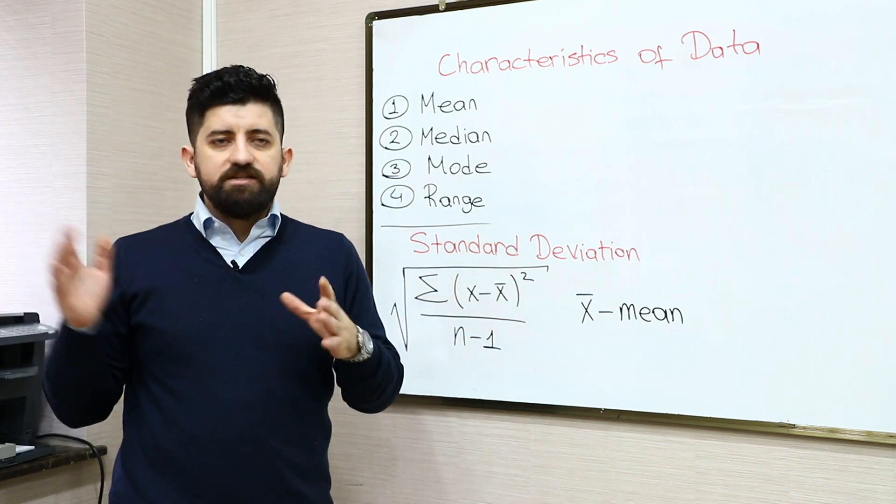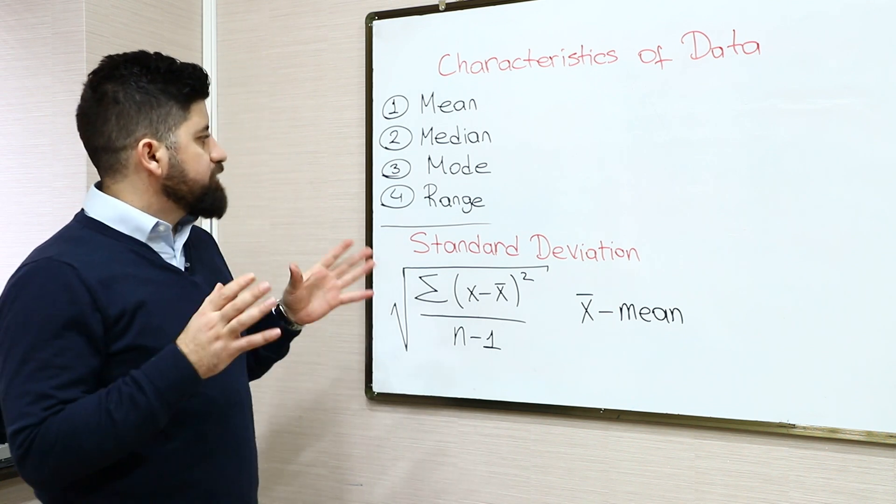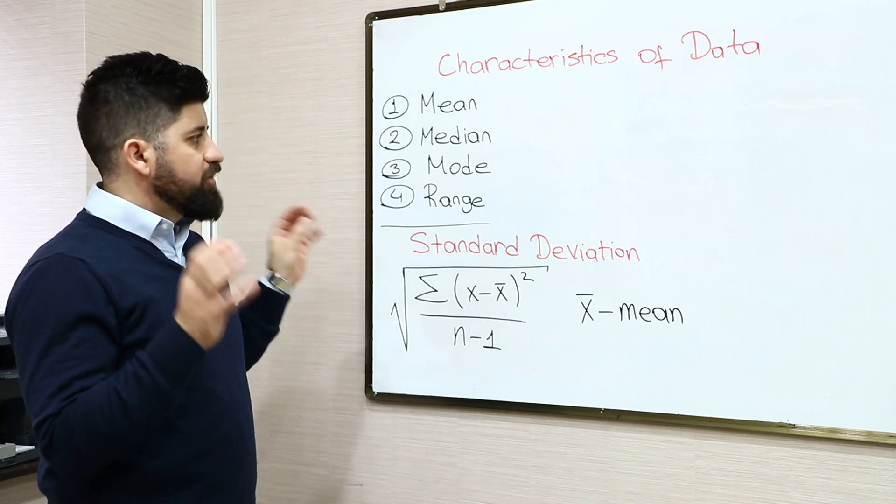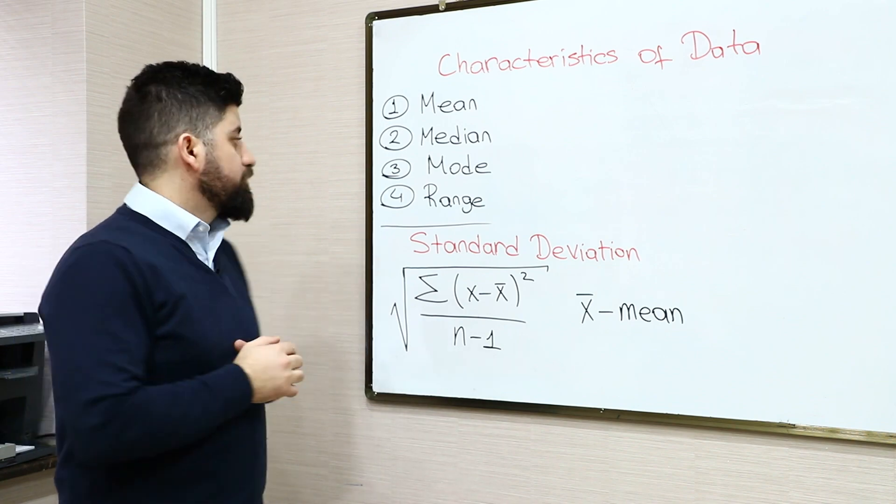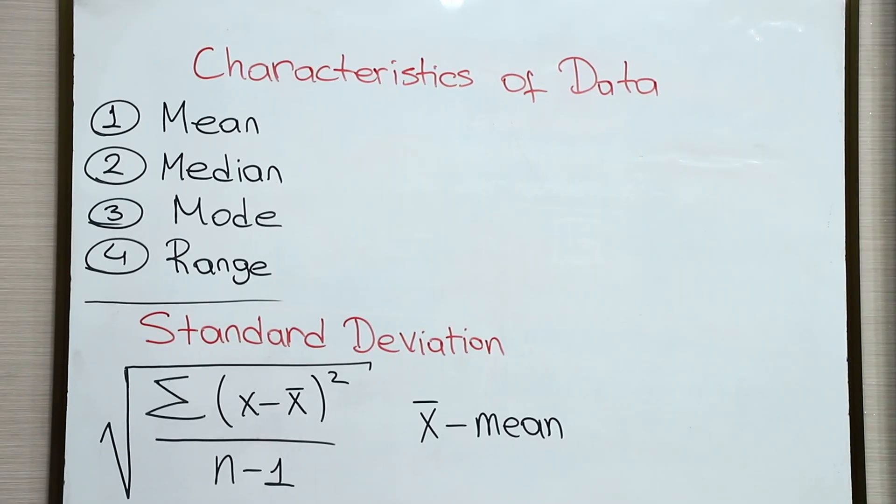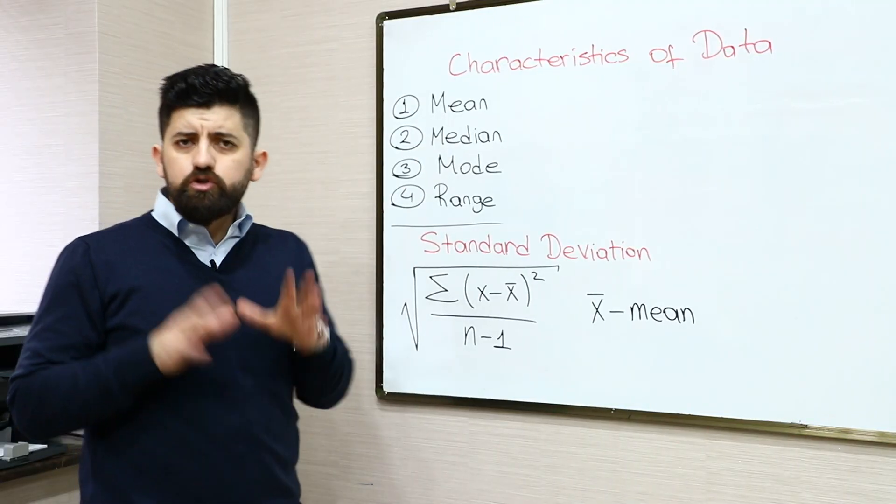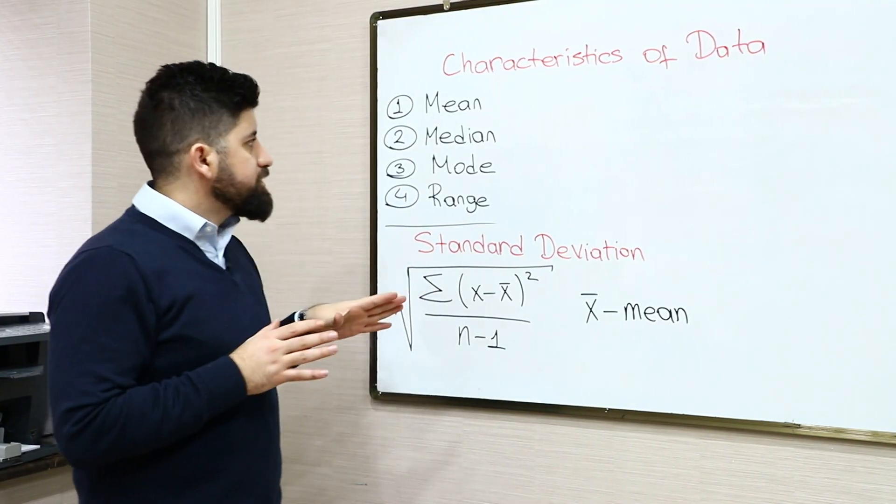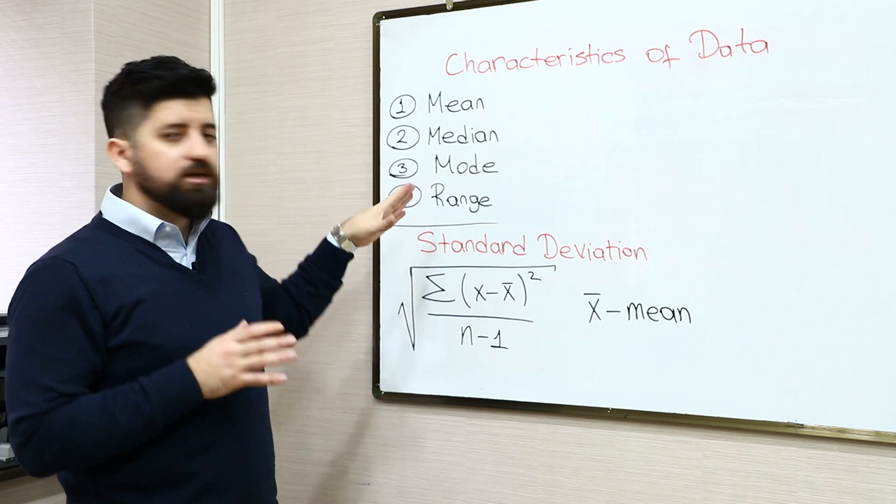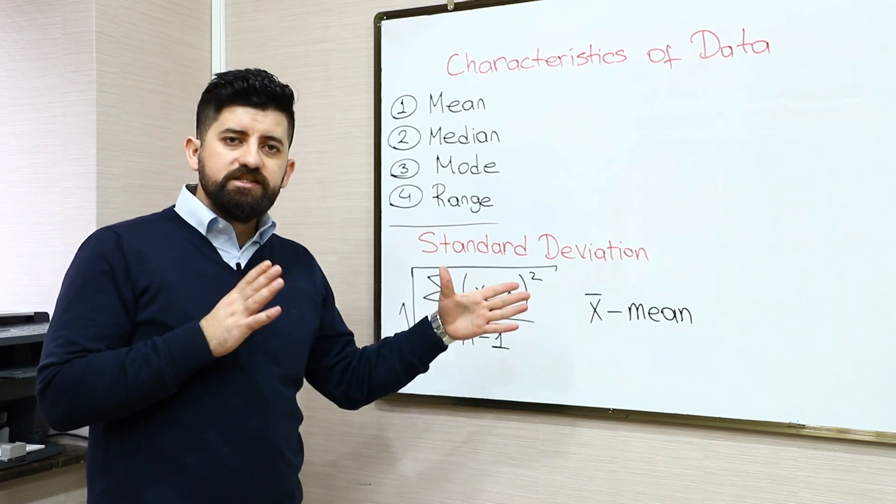The range is the difference between the smallest and greatest value of the numbers in a set or data. To find out all these terms except mean, you should arrange the numbers in increasing order from least to greatest.